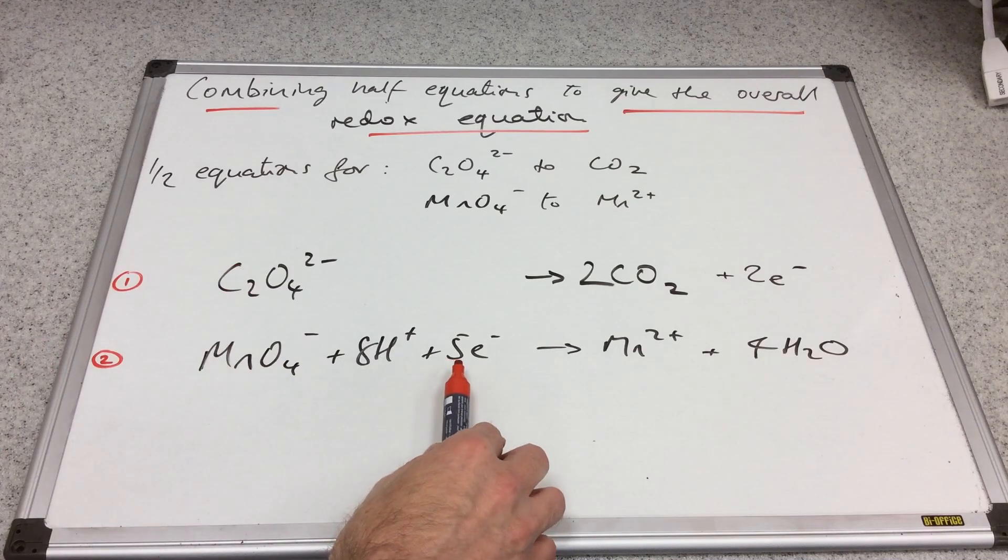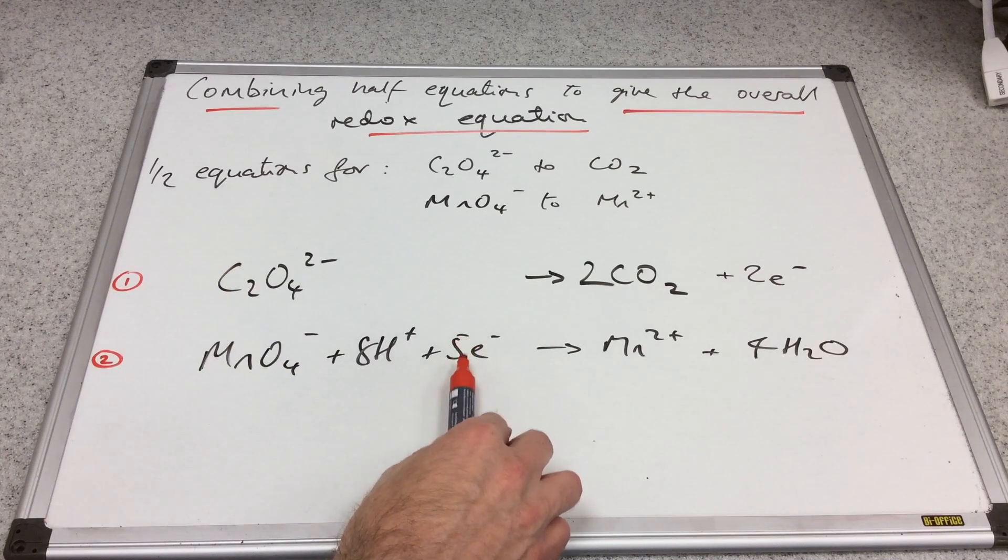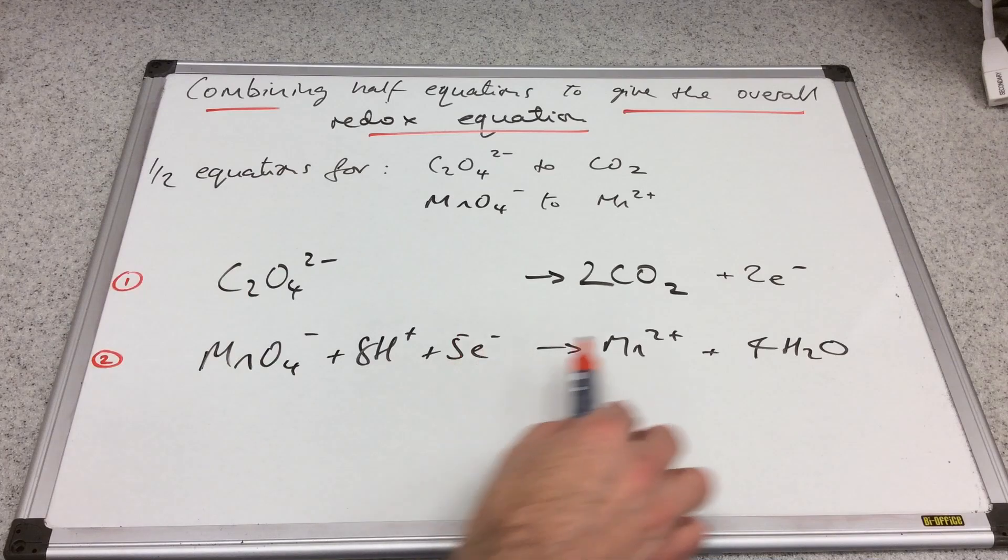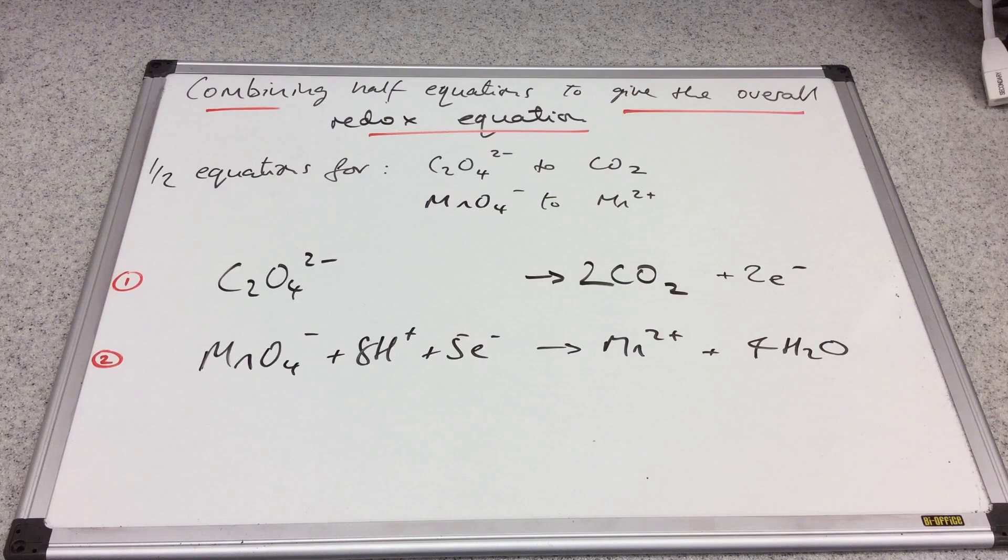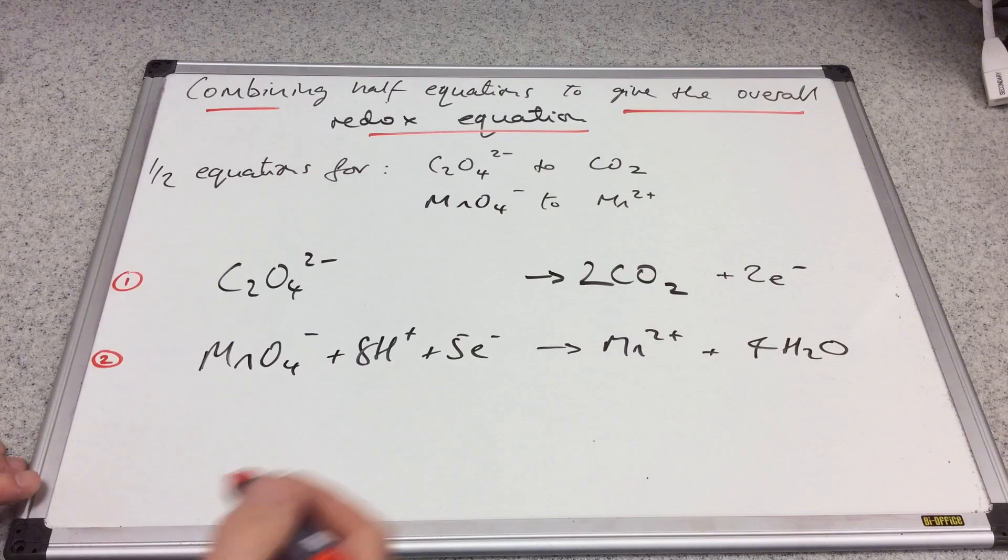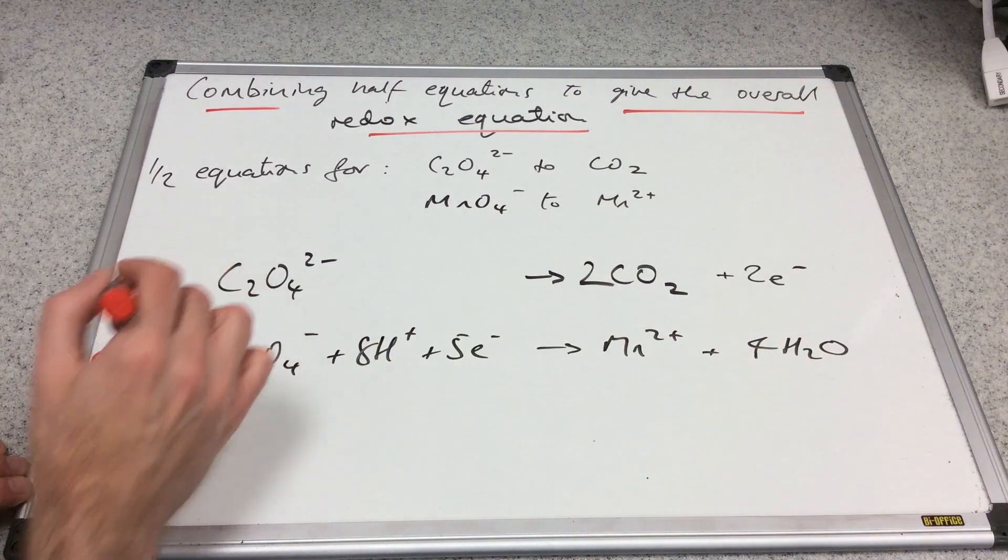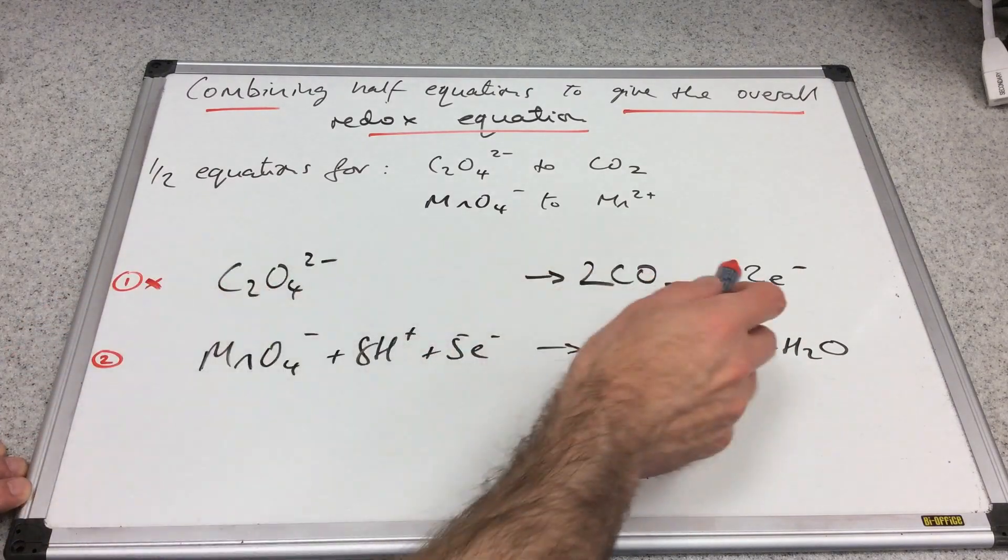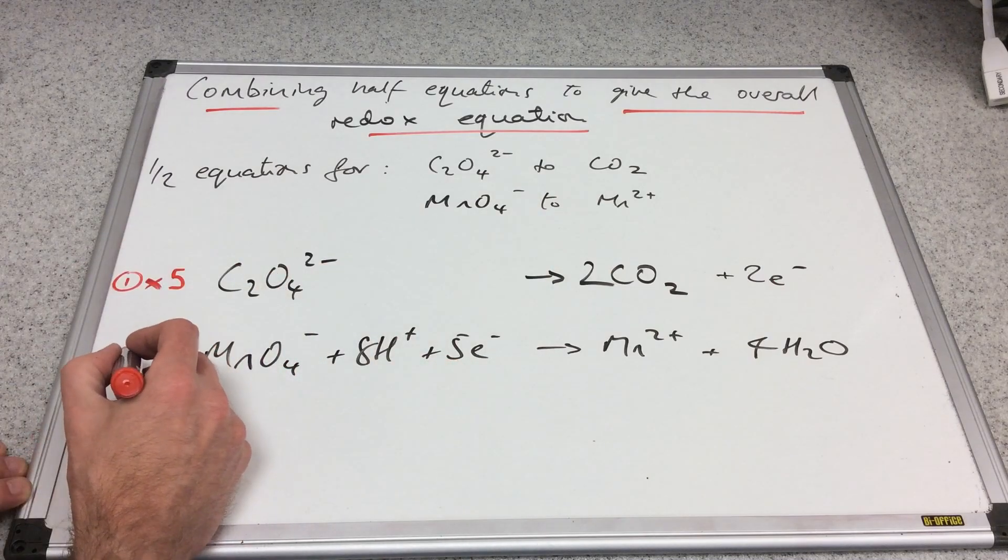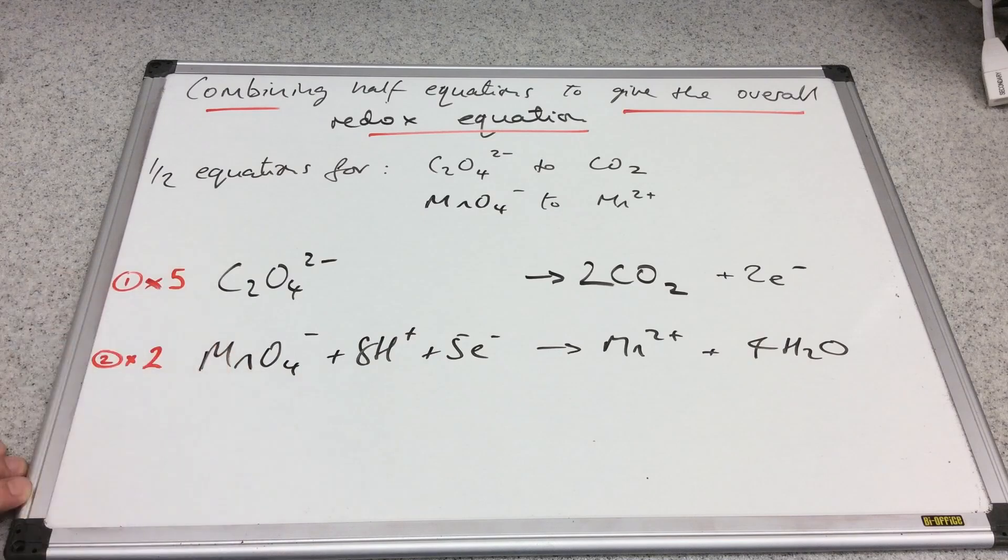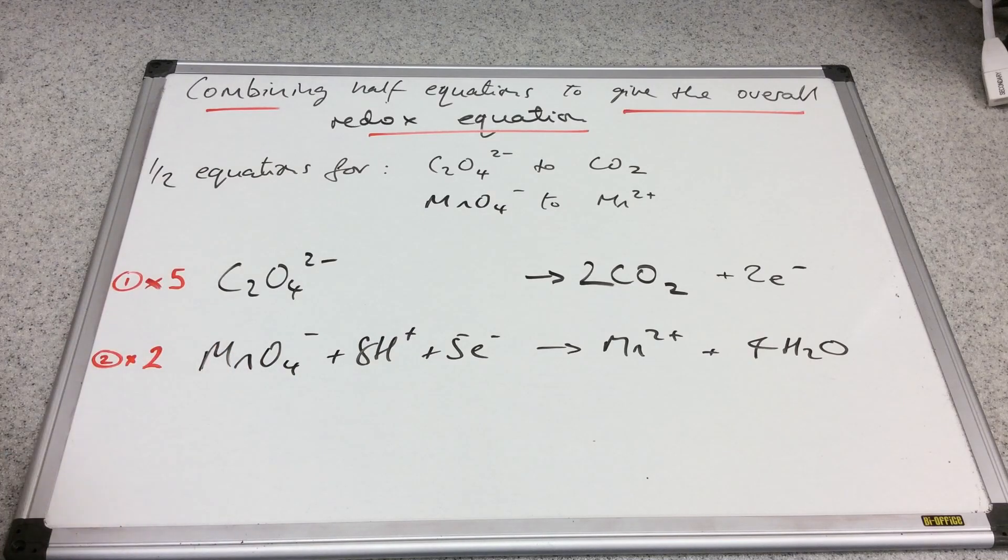When we add these two together, we want the electrons to disappear. We've got five electrons on the left on this one, and two on the right on this one. What could we multiply these equations by to get the electrons equal? We need to get them up to 10, so we're going to multiply this equation by five and this half equation by two, then add them together.